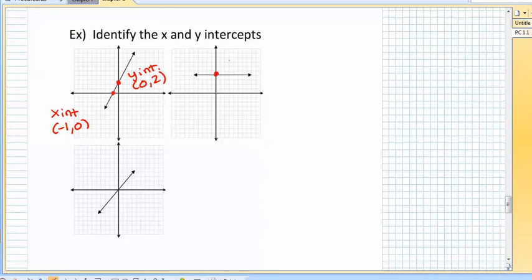Here, if you notice, the y-intercept would be zero, four. The x-intercept, well, does it ever cross the x-axis? And the answer is no. So then there is none or no x-intercept.